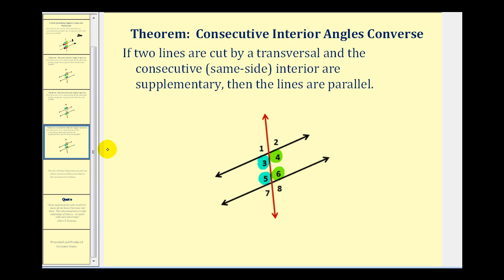The last theorem for this video is the consecutive interior angles converse. This tells us that if two lines are cut by a transversal and the consecutive, or same-side, interior angles are supplementary, then the lines are parallel. So if angles three and five are supplementary, or angles four and six are supplementary, then the lines would be parallel. We're going to prove each of these theorems in the next several videos.